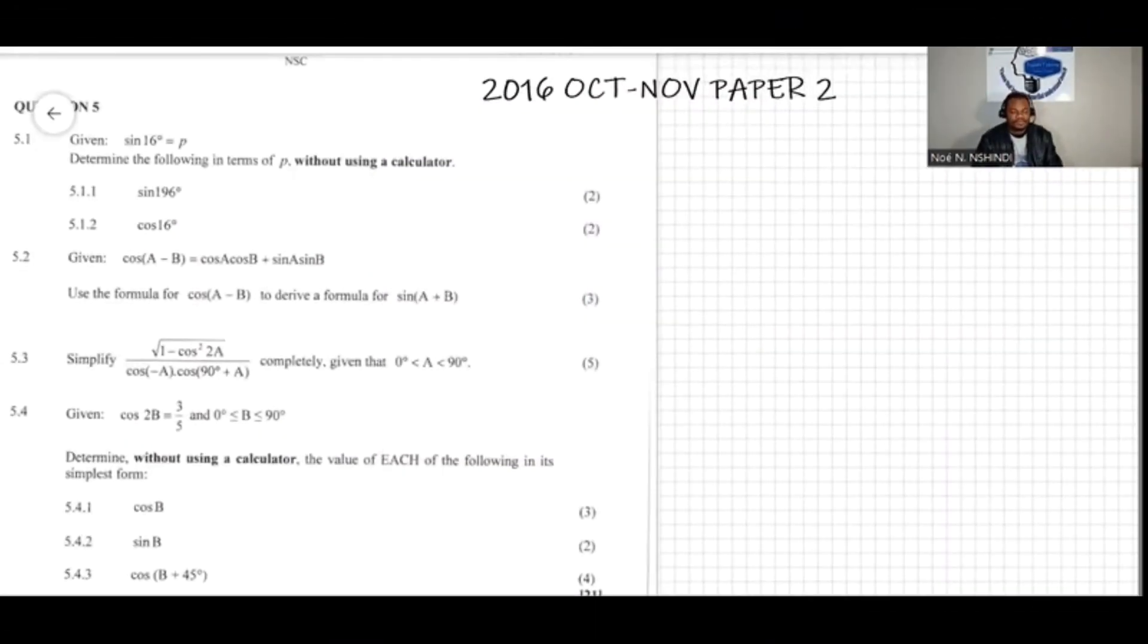Well, we have this question here, question 5.1. The question says given sine of 16 degrees equal to p, determine the following in terms of p without using a calculator. So the question here, we have sine of 16 degrees equal to p, and we need to find the value of sine of 196 degrees.